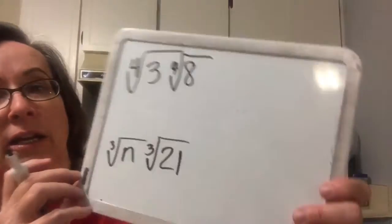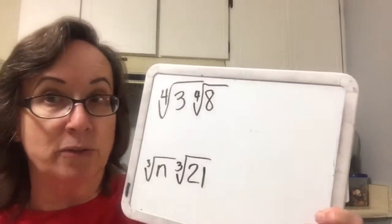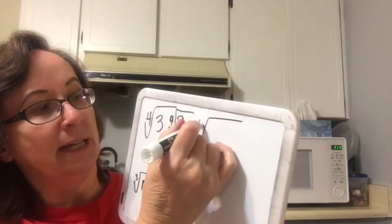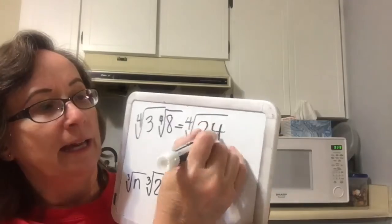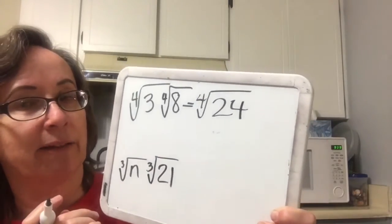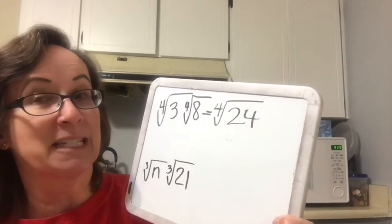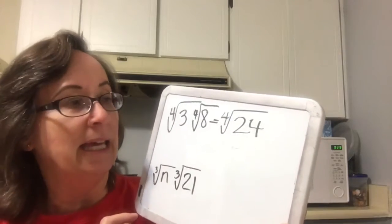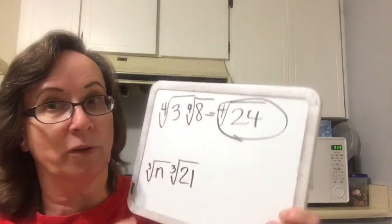Now we're talking about higher roots. When we are using the fourth root and the fourth root, we can still use the product rule. We're going to put them together into one big fourth root. 3 times 8 is 24. And then we're going to ask: can I pull out any perfect fourths? The smallest perfect fourth is 16, and 16 does not go evenly into 24. Therefore, I would leave my answer as the fourth root of 24.